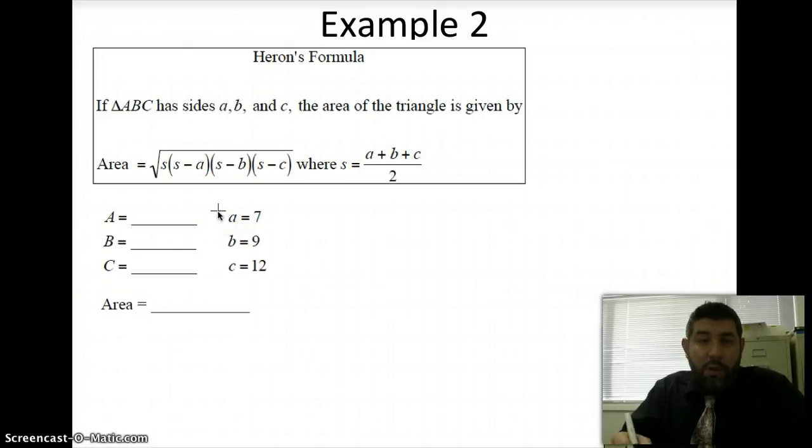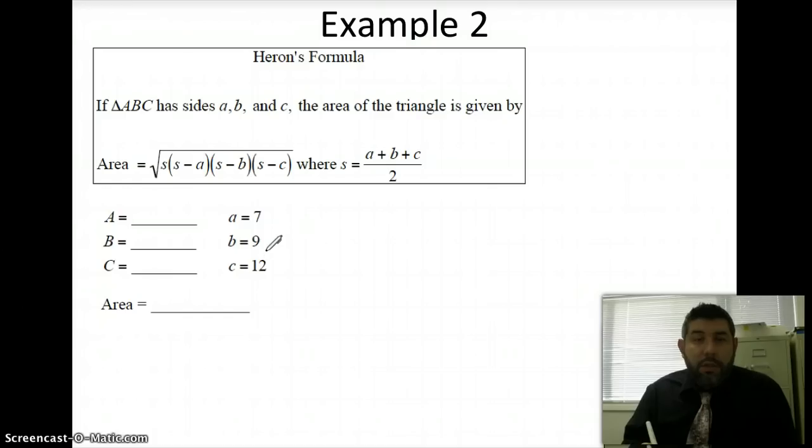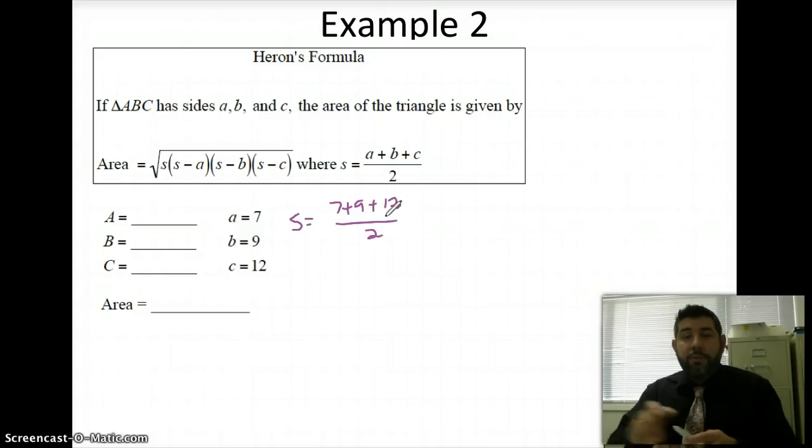So we're going to do this all kind of all at once here. We really don't need to draw a picture in this case because all we need to know is all three sides. So what we'll do is we'll just put all three sides in this formula. So let's first find the semi-perimeter. So S is equal to 7 plus 9 plus 12 divided by 2. So we're going to do that in a calculator.